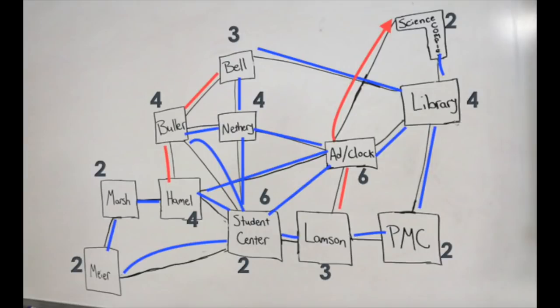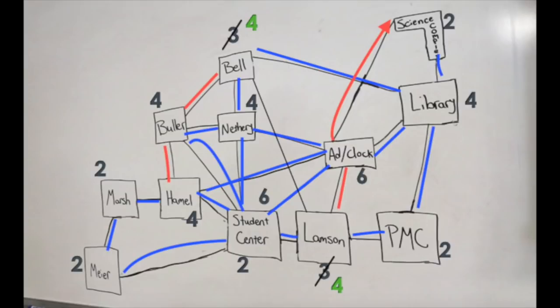So now that we know that there is an Eulerian path on our campus graph, can we find an Eulerian circuit? Well, Euler said that a graph has an Eulerian circuit if and only if all of the degrees are even. We already counted the degrees, and we know that two vertices have odd degrees, which means there is no Eulerian circuit in our graph. But what if we made a sidewalk between Lambson and Bell? That would make all the degrees even, and we would have an Eulerian circuit.